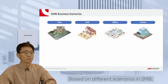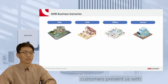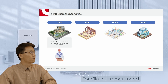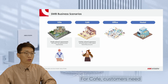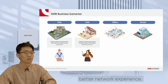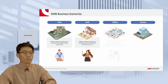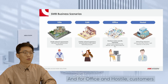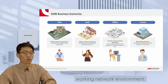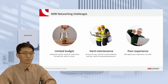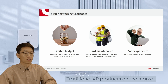Based on different scenarios in SMB, customers present us with different needs for AP products. For villas, customers need small-size network deployment. For cafes, customers need better network experience. And for office and hostel, customers need cost-efficient APs for performance and expansion, as they already have a working network environment. Traditional AP products on the market cannot solve these challenges properly.